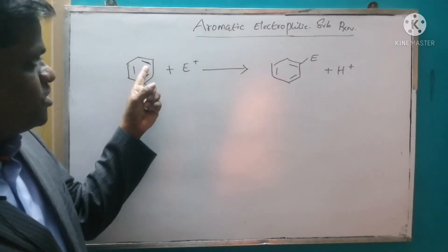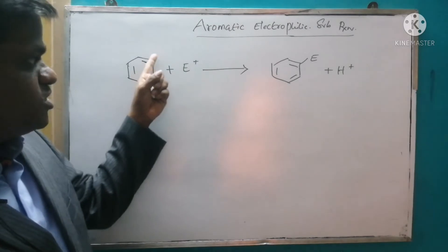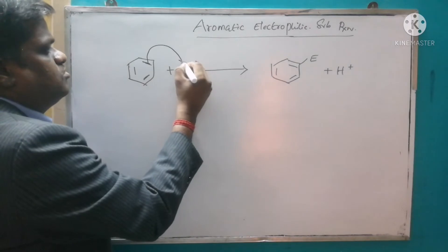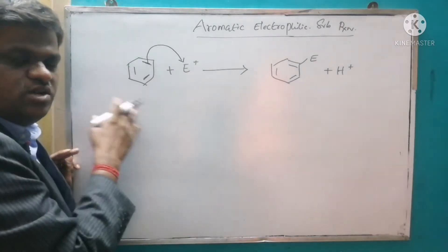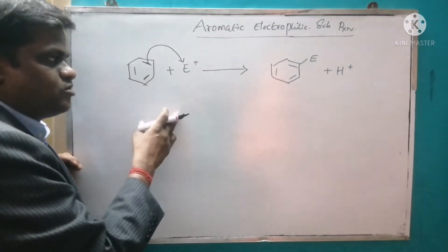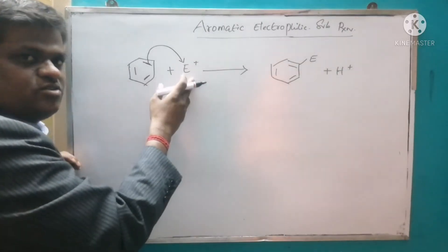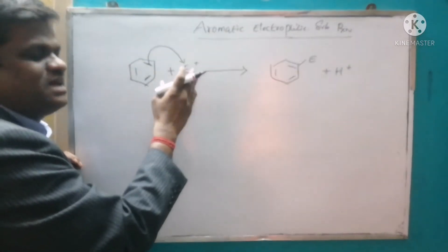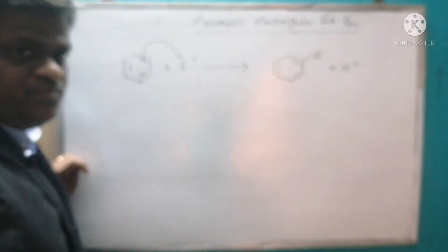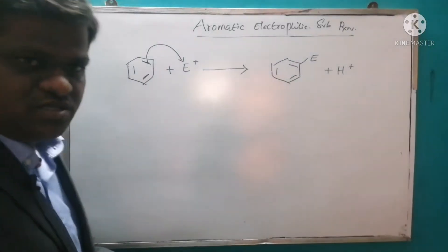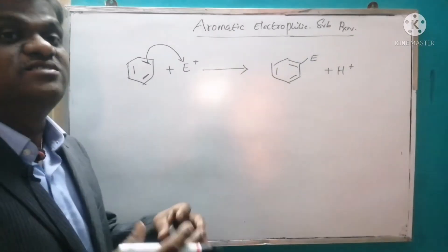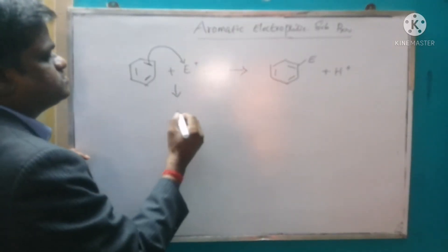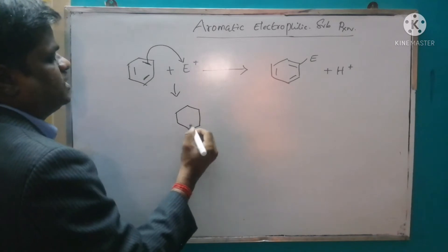Now the benzene, whatever the pi electrons in the benzene is going to involve, that means it is going to act as a Lewis base. We know that Lewis base means it can donate an electron. So this electrophile is going to act as a Lewis acid, that means it is going to accept an electron. Why I called it, most of the organic chemistry reactions are acid-base reactions. Now see, once it reacts then what will happen, it forms like this.